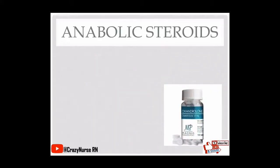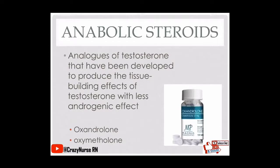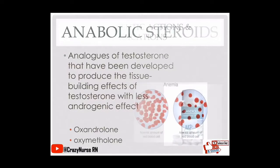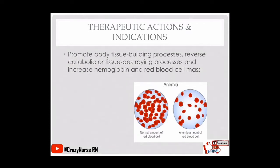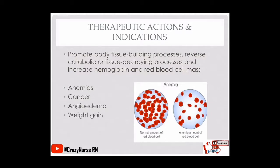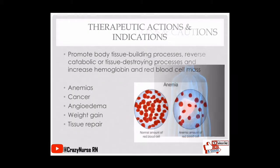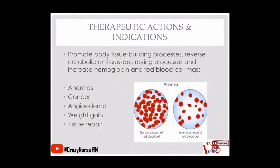Anabolic steroids are analogues of testosterone developed to produce the tissue-building effects of testosterone with less androgenic effects. Examples include oxandrolone and oxymetholone. Therapeutically, they promote body tissue building processes, reverse catabolic or tissue-destroying processes, and increase hemoglobin and red blood cell mass. They are indicated for patients with anemias, cancer, angioedema, and for weight gain and tissue repair.